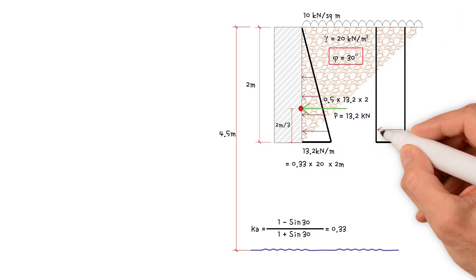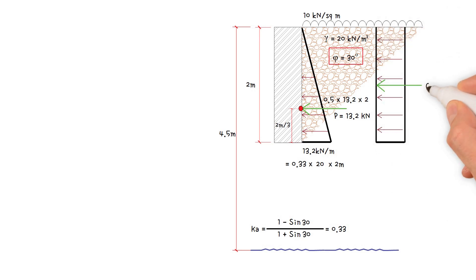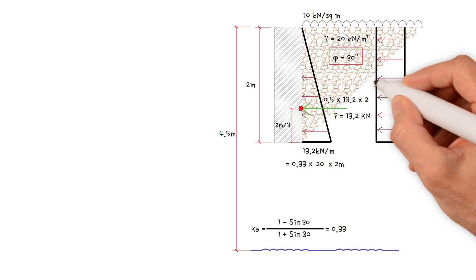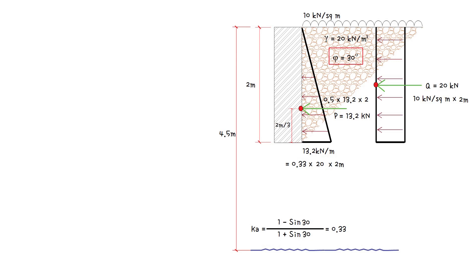For a rectangular distributed load, the magnitude of the resultant force Q is equivalent to the area of the rectangle, which is 10 kN per square meter surcharge times the depth 2 meters. This gives us a value of 20 kN per meter run. The force of the rectangle acts in the middle of the length of the rectangle, so this is the location of the resultant force Q.